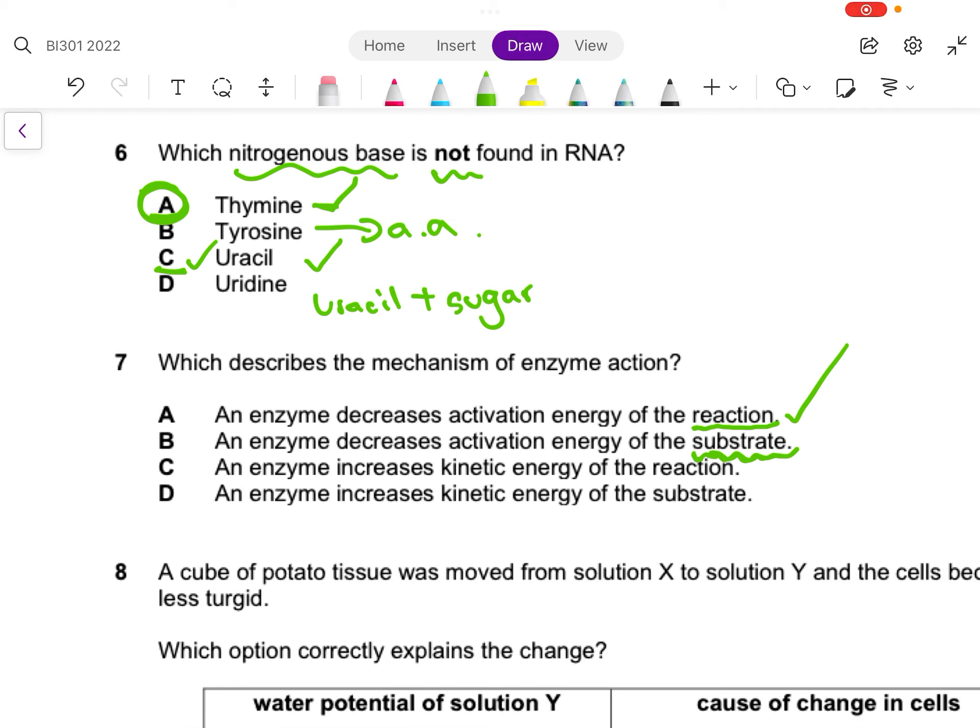C: an enzyme increases kinetic energy of the reaction - it does not. Enzymes do not contribute energy to any reaction. Therefore D is also wrong. It cannot contribute energy to the reaction. So the answer is A.